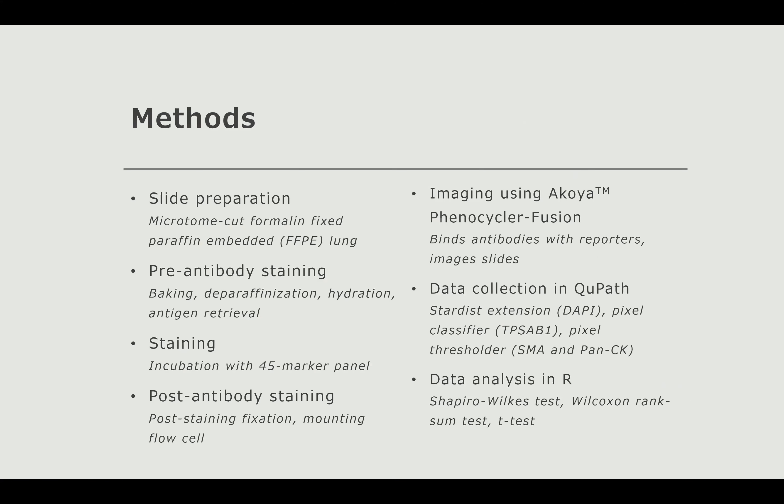Here are my methods. Basically, we cut and prepared our slides — we cut formalin-fixed paraffin-embedded lung with a microtome, made one slide per donor, and stained each slide with a 45-marker antibody panel. We then ran the slide through the Akoya PhenoCycler Fusion machine, which produces multiplex fluorescent images. From that image I collected data in QuPath, and then analyzed it in R to get my results.